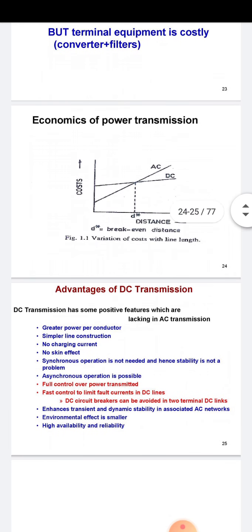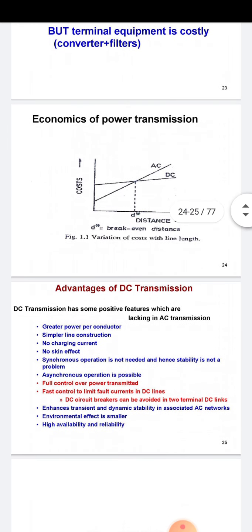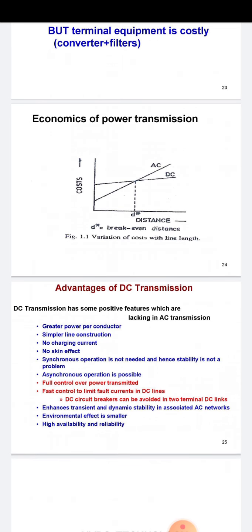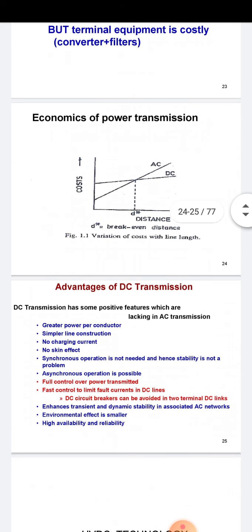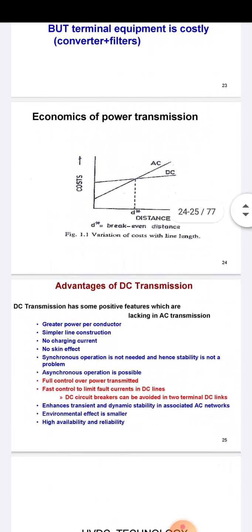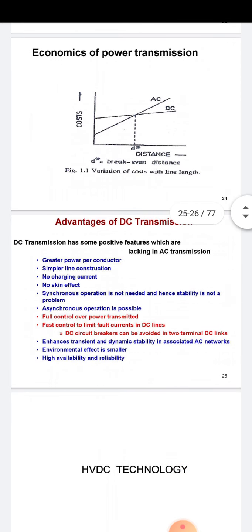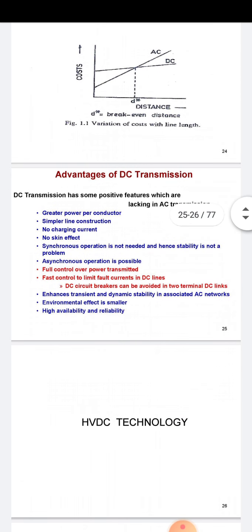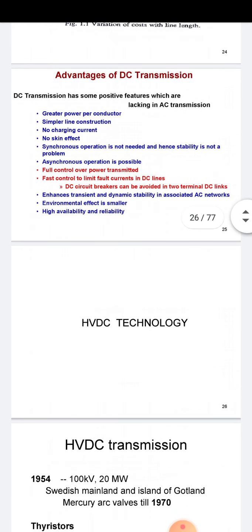The advantages of DC transmission include: greater power per conductor, simpler line construction, no charging current, no skin effect, and synchronous operation is not needed — hence stability is not a problem. These are the key advantages and features of DC transmission lines.